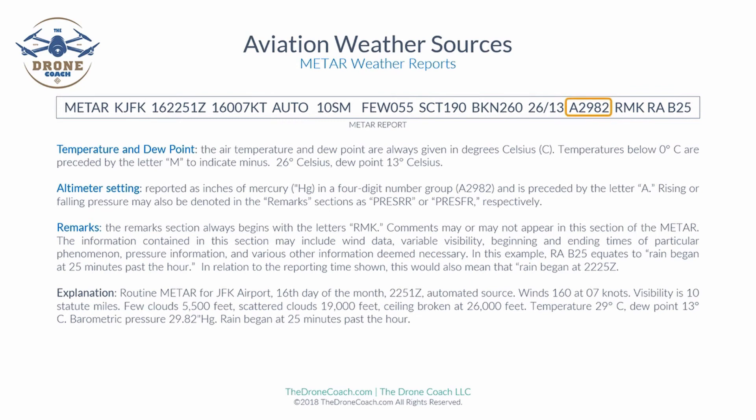Next we have the altimeter setting, reported in inches of mercury as a four-digit number group. In this example we have 29.82 inches of mercury. Rising or falling pressure may also be denoted in the remarks section.